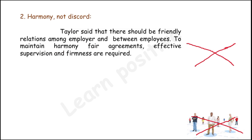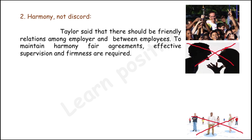The next principle is harmony, not discard. Taylor said that there should be a friendly relationship among employer and employees. To maintain harmony, fair agreements, effective supervision, and firmness are required. If there is no friendly relationship between employer and employee, there will be arguments. Due to arguments, the employee feels disappointed. If the industry gives false promises, the employee is not satisfied, leading to discord and arguments with management, which reduces the production rate and hinders the industry's growth.